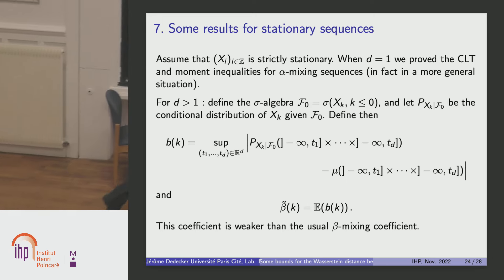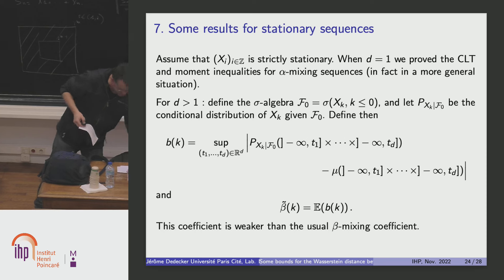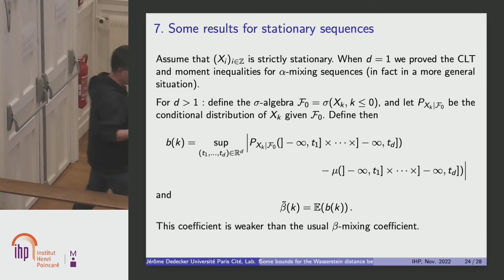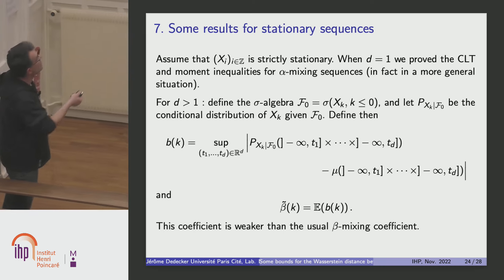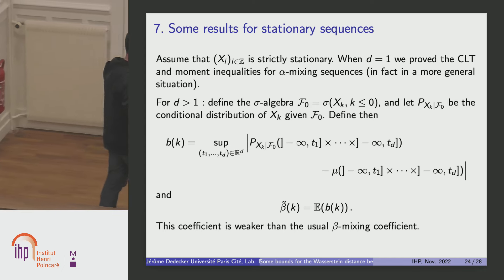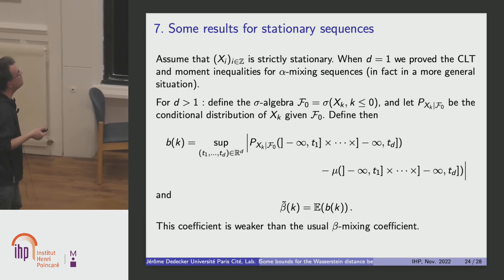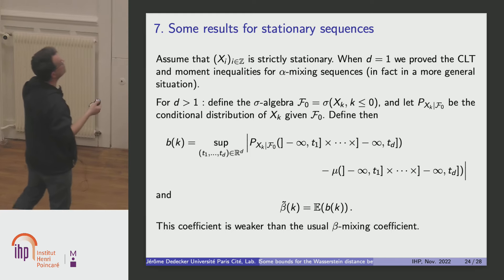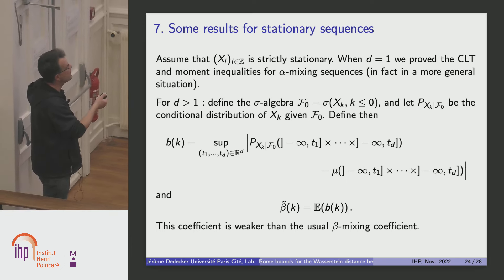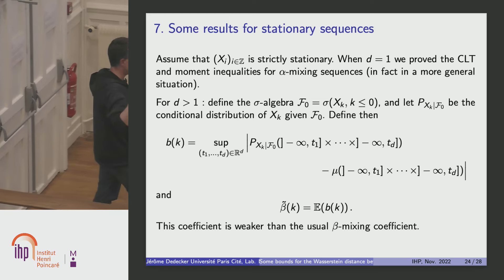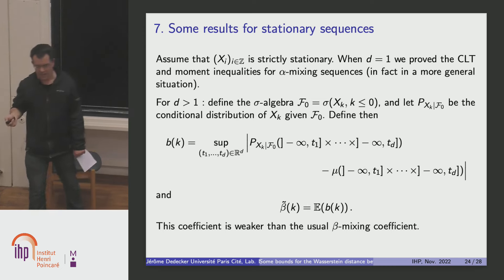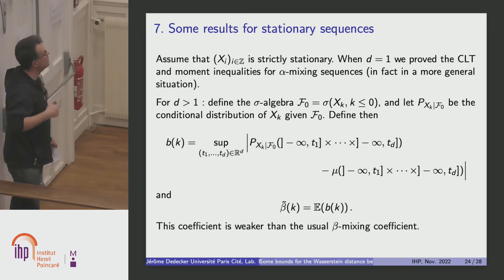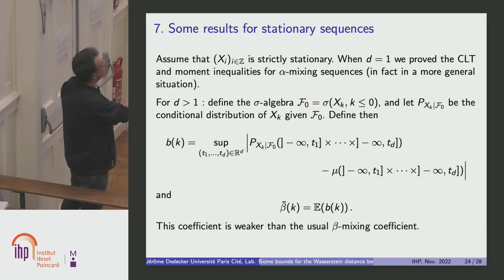Just a word about dependency, because I cannot make a presentation without saying something like that. We want to know if some part of the bounds are true in the non-IID case. We first consider the strictly stationary case, which is the most natural situation when you have ergodic chains and similar structures. In the one-dimensional case, with Florence, we prove some results in the alpha-mixing case and more generally. If you don't know about alpha-mixing sequences, you should remember that it contains the case of Harris recurrent, irreducible, aperiodic Markov chains.